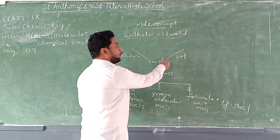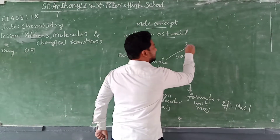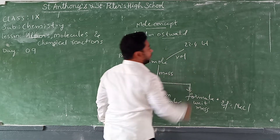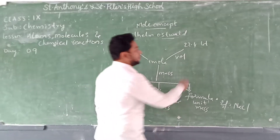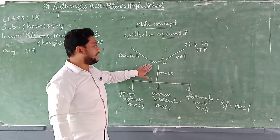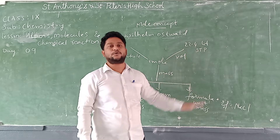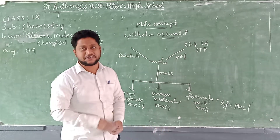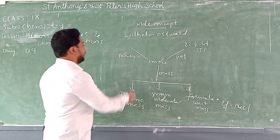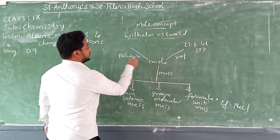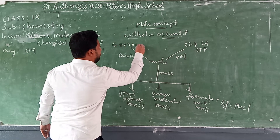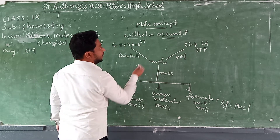One mole of any substance occupies 22.4 liters at STP (standard temperature and pressure). One mole of any substance contains 6.023 × 10²³ particles. This is Avogadro's number.